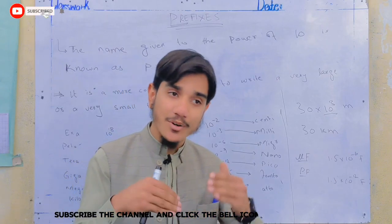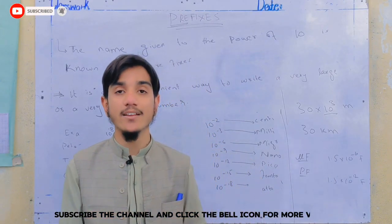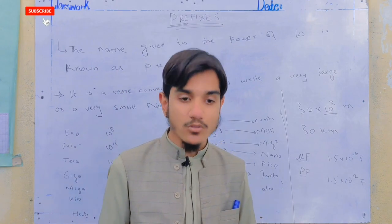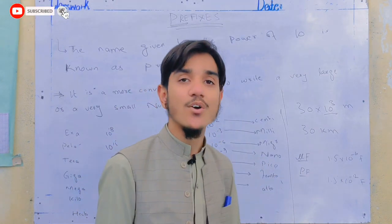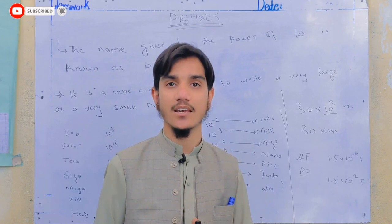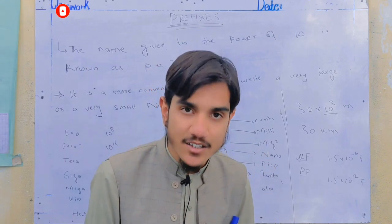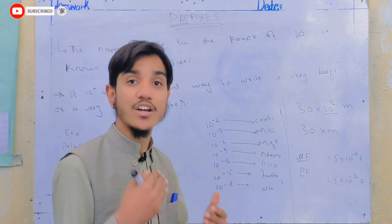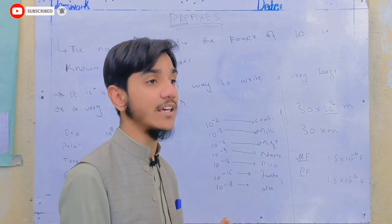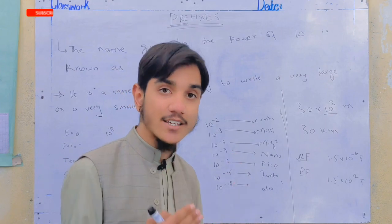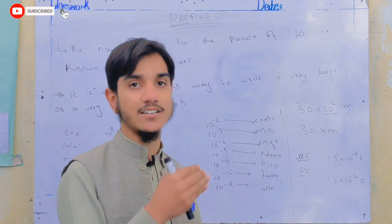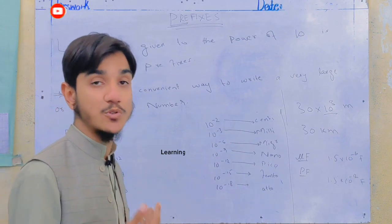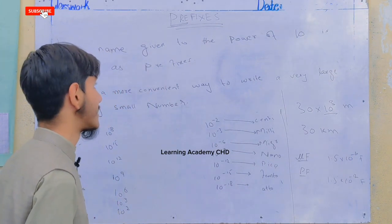So, this power of 10 representation is called scientific form. When you study physics in daily life, you encounter very large and very small numbers. Using prefixes and scientific notation makes your data simpler and easier to work with. You can read, study, and fix your calculations more easily using this form.